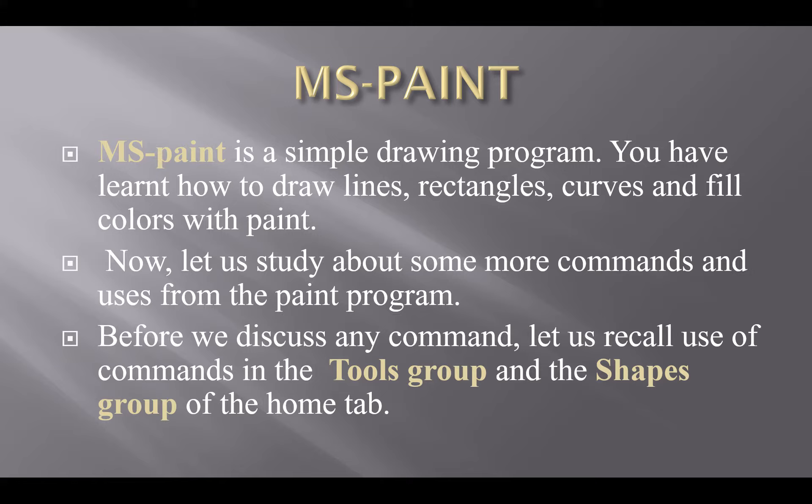Tools group mein aap ke paas fill with color ka option hota hai — agar aap ne kisi shape ko color se fill karna hai. Tools group mein pencil, eraser, aur text ka bhi option hota hai. Agar aap painting mein text add karna chahte hain to wo tools group se select karte hain. Aur shapes group se hum shapes ko select karte hain — mukhtalif qisam ki shapes jo hum draw karna chahein wo shapes group se select karenge.